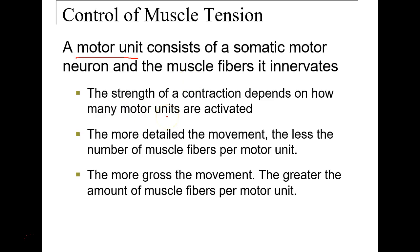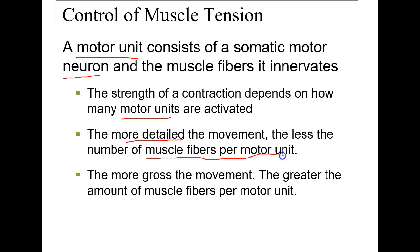Control of muscle tension involves motor units — how our muscle will contract for smaller or larger movements. Motor units are controlled by a neuron, and the strength of a contraction depends on how many motor units are activated at one time. For detailed movements like writing or picking up a pencil, we have fewer muscle fibers per motor unit. For gross movements like running, we have a greater number of muscle fibers per motor unit.